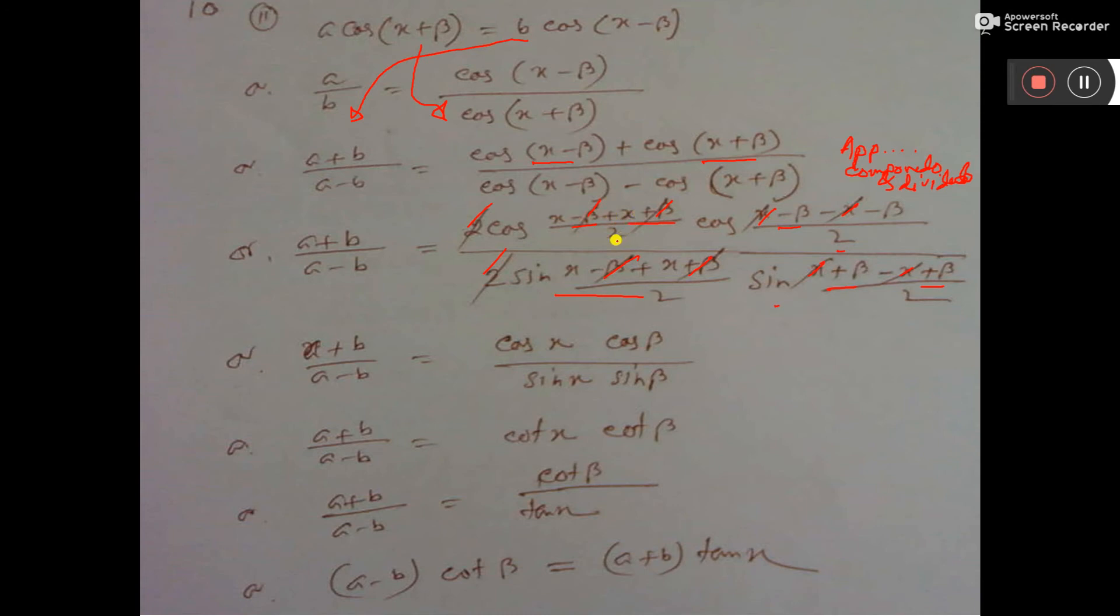Now 2x by 2 means only x minus beta, minus beta, that is minus 2β/2, that is minus β. And cos minus β is cos β only, because the minus sign will be absorbed. Now sin 2x/2, that is sin x. Sin 2β/2, that is sin β only.